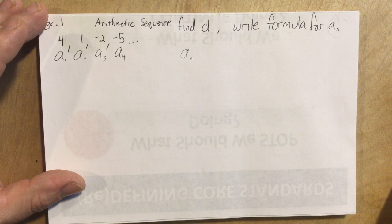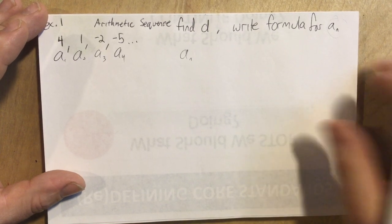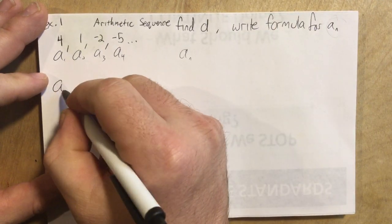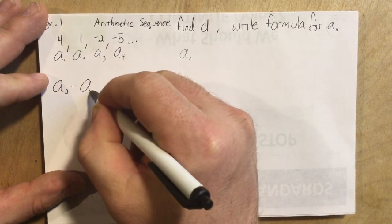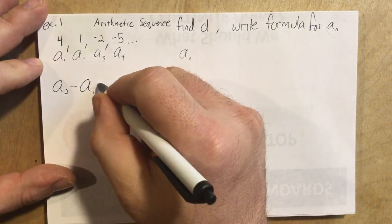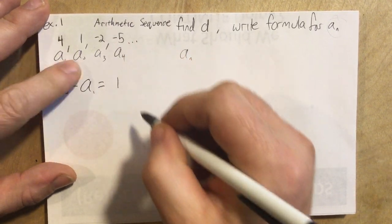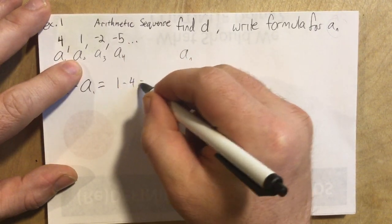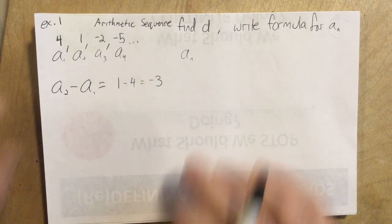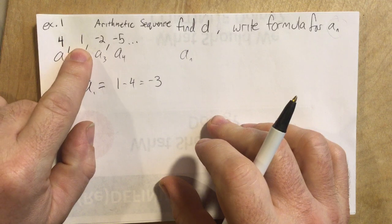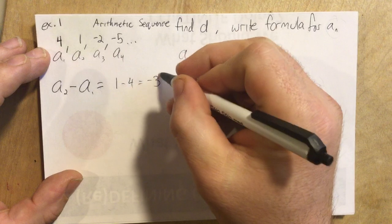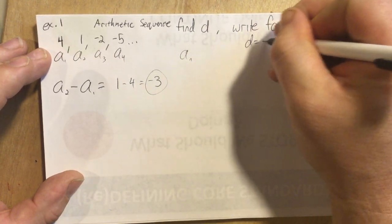So, first of all let's find d, which is necessary for finding the formula. Technically speaking we could take a_2 and subtract a_1, or we should be able to take any term and subtract the term before it and get the common difference. So that would be 1 minus 4, that's negative 3. Or what do I add to 4 to get to 1? Negative 3. So d is negative 3.